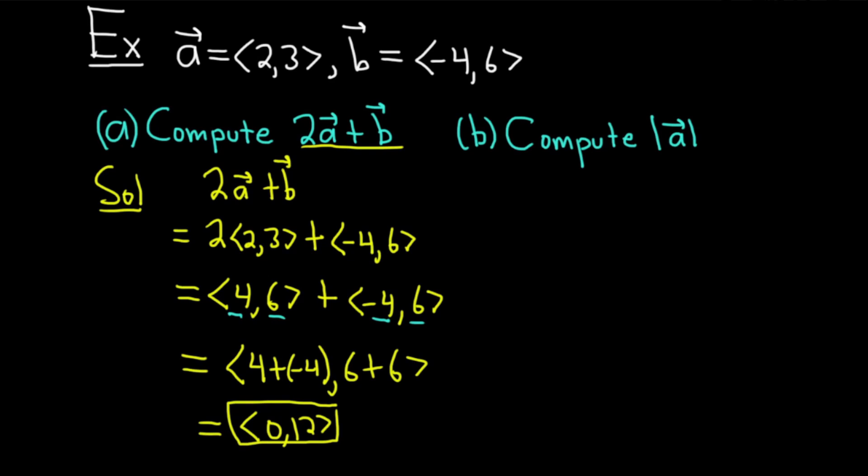Part b, compute the magnitude of a. That's what the bars mean. They mean magnitude. This is a side note. Some books use a double bar for magnitude. So if you see that, it means the same thing. Let's go ahead and work this one out.